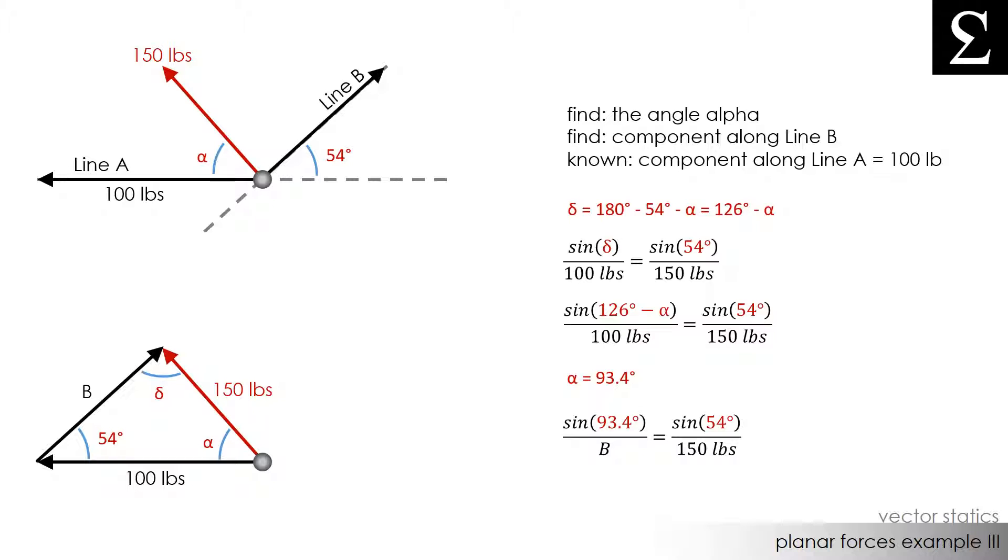And really, you could have just used the angle delta and the 100 pounds instead of the 150 pounds and 54 degrees. When we solve for side B, we find that the component of the 150 pound force acting along line B is 185.1 pounds.